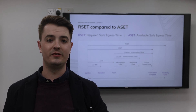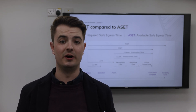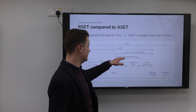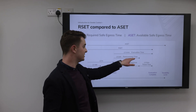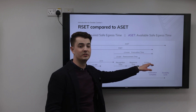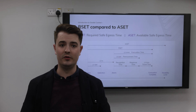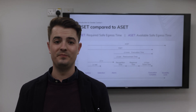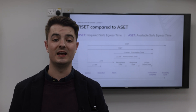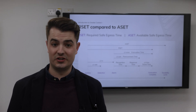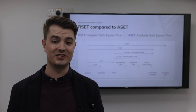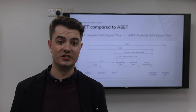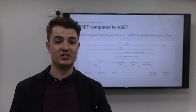When evaluating the RSET, three components need to be considered: detection time, pre-movement time, and movement time, as defined on this chart. The detection time is the time from the ignition of the fire to the alarm being raised. The detection time — and as such, the RSET — is highly dependent on the type of fire detection system provided. For example, a manual fire alarm system will likely mean a longer detection time than an automatic detection system with detection devices throughout the building.